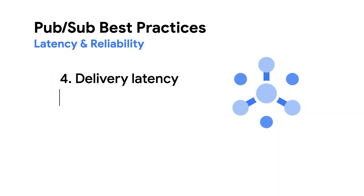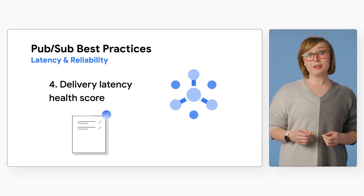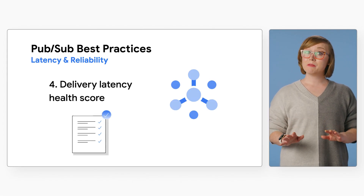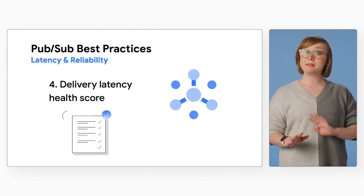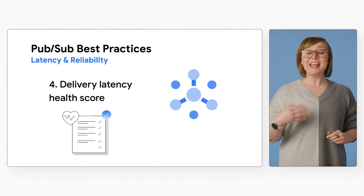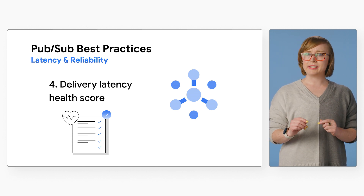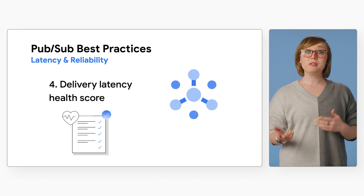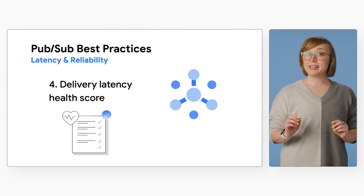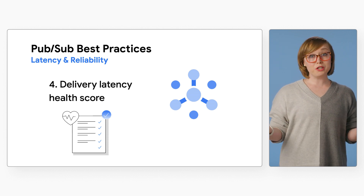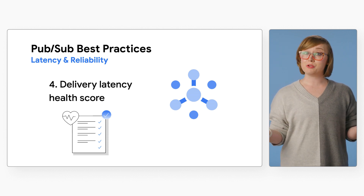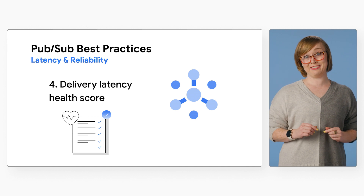Number four: delivery latency health score. In PubSub, the delivery latency is the amount of time elapsed after a message is published and then delivered to a subscriber. If your message backlog is increasing, you can use the delivery latency health score to check which factors are contributing to an increased latency.